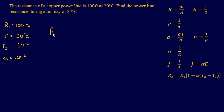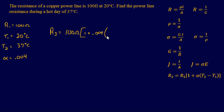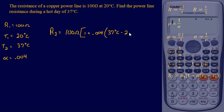So we have enough here to start plugging and chugging. R₂ — the resistance we're looking for at that temperature — equals R₁, which is 100 ohms, times (1 plus the temperature coefficient of 0.004 times the second temperature minus the first temperature).